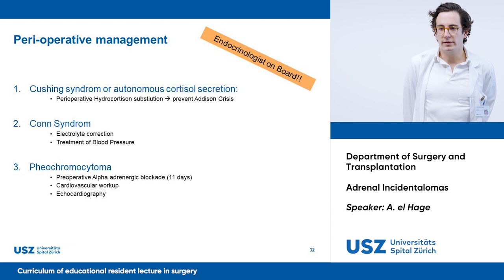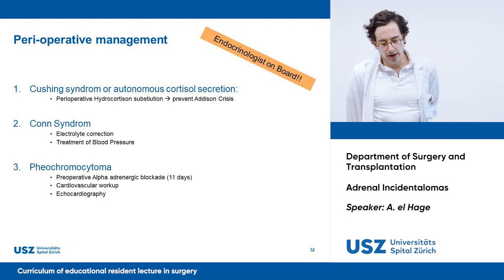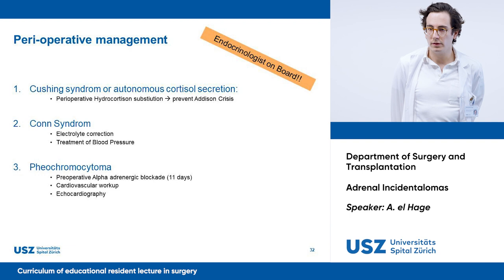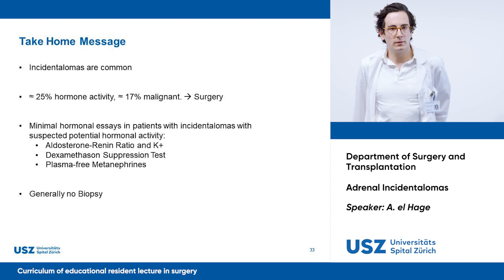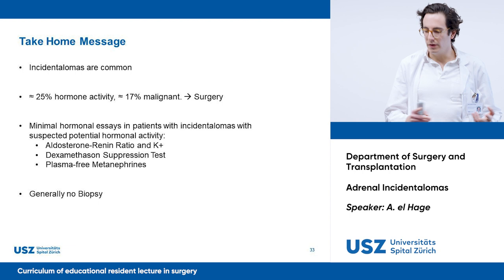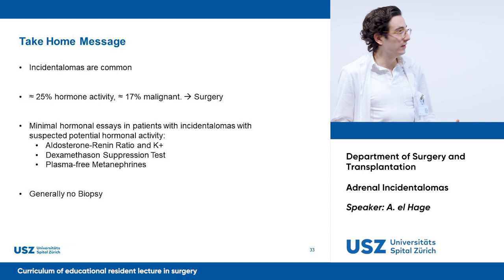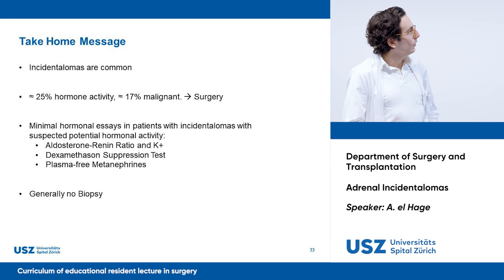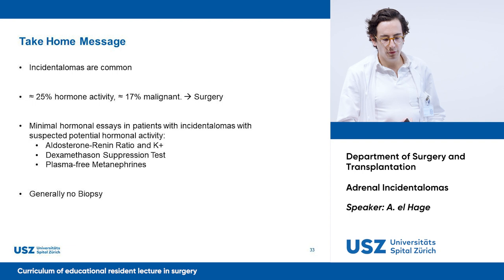A cardiovascular workup is also recommended. Take-home message: adrenal incidentalomas are common — 25% are hormonally active and 17% are malignant, which are the indications for surgery. If you have an adrenal incidentaloma with suspected hormonal activity, measure the aldosterone-to-renin ratio, potassium, perform a dexamethasone suppression test, and measure plasma-free metanephrines. Remember: generally, biopsy has no place in adrenal incidentalomas. Thank you very much.